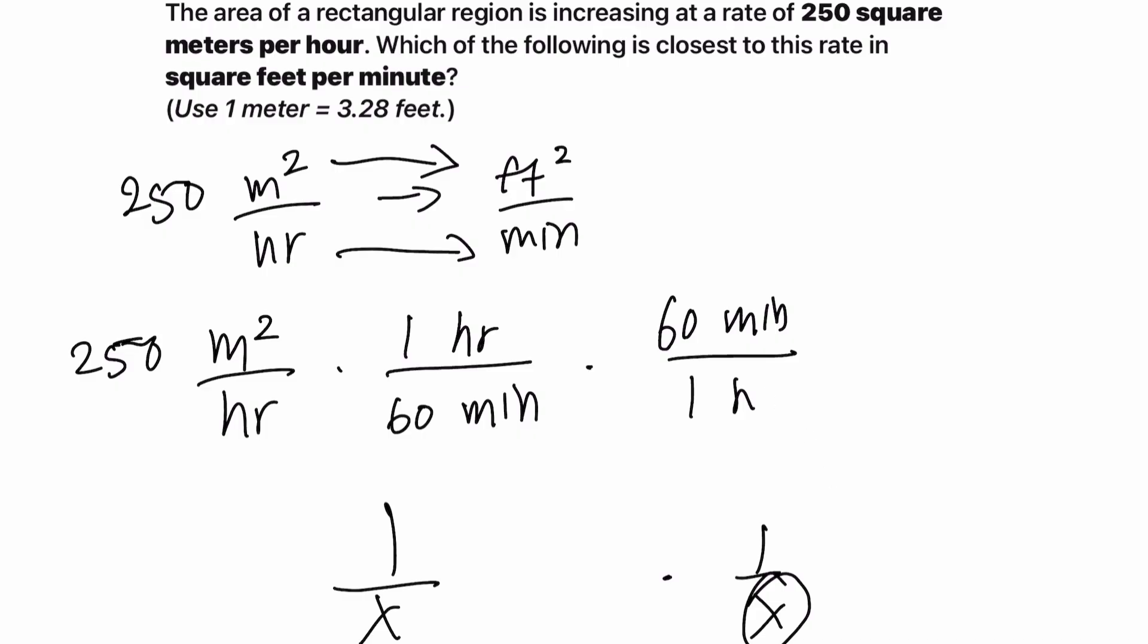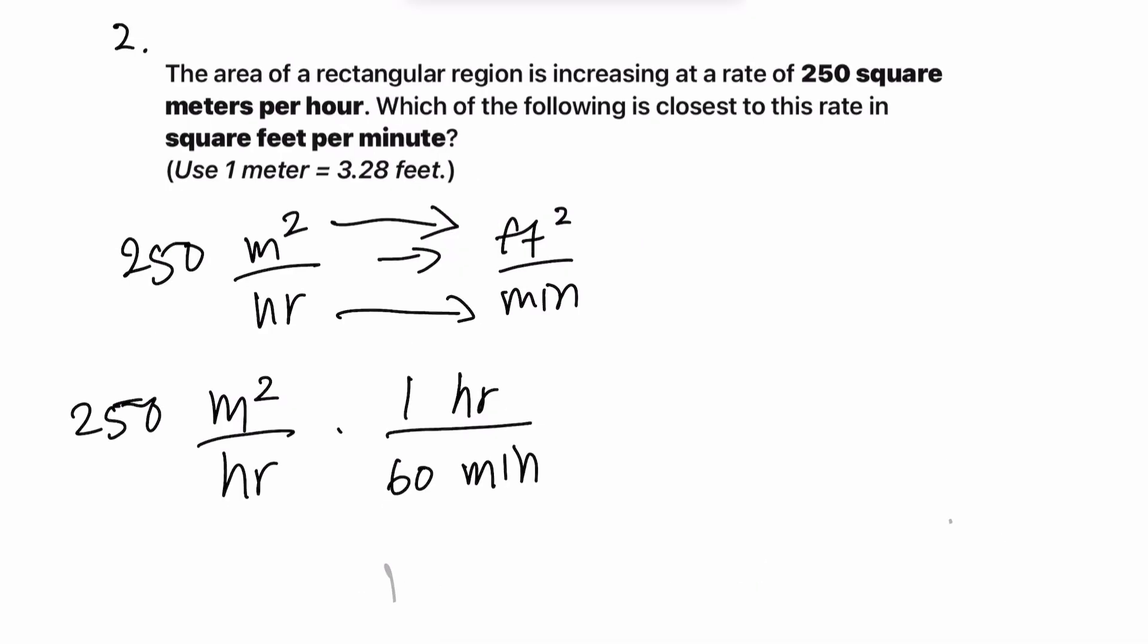We would also have x in the denominator here, right? Because there's an hours down here. So we would end up with 1 over x squared. We don't want this. We want the hours to cancel out. That's why I was very careful to write the hours up top because we already have an hours at the bottom. And these two cancel out.